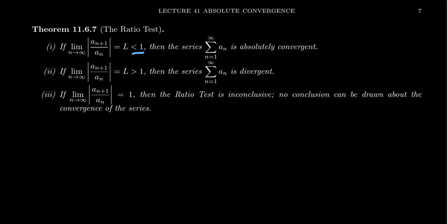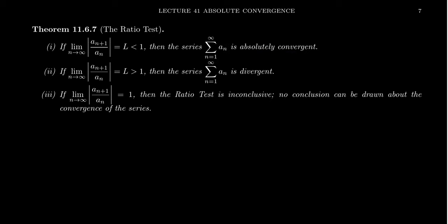If that limit L is less than one, then we can conclude by the ratio test that the series from n=1 to infinity of a_n is absolutely convergent. Absolute convergence means the sum of absolute values converges, and as we've seen, absolute convergence implies convergence. So the ratio test doesn't just give convergence — it gives absolute convergence when L < 1. Absolute values are built into the mechanism of the ratio test.